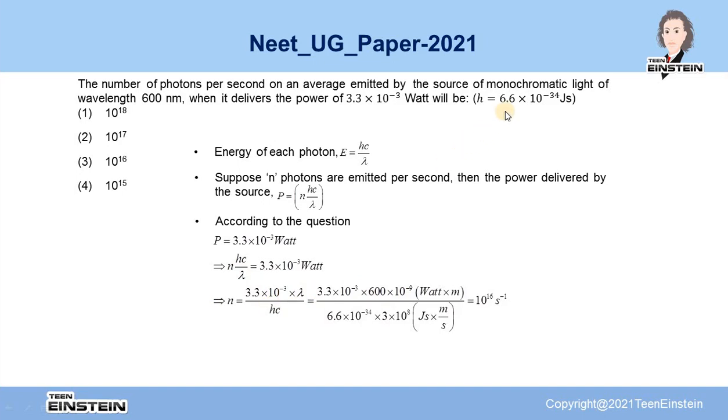and H is given as 6.6 × 10^-34 joule seconds, and C is the speed of light in vacuum, then we see that n is obtained as 10^16 per second. That means,